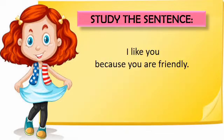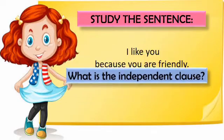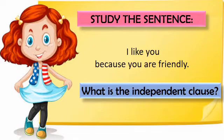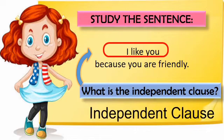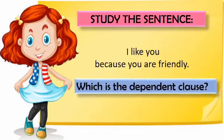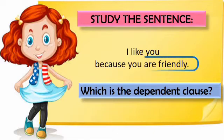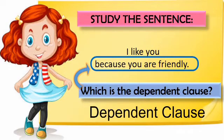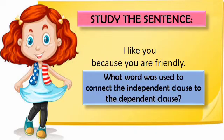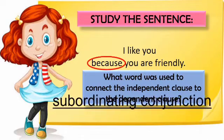Let us study another sentence: I like you because you are friendly. What is the independent clause? The word used to connect the independent clause to the dependent clause is because. That is called a subordinating conjunction.